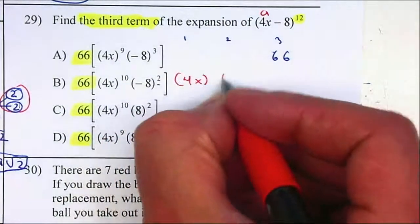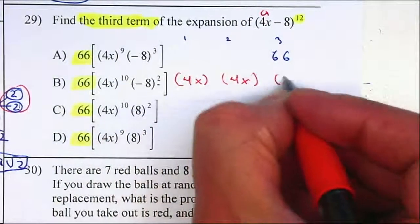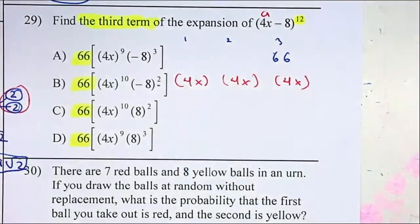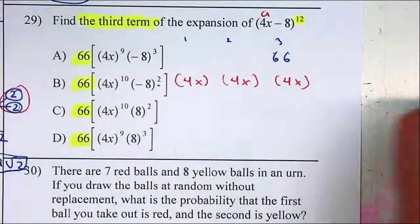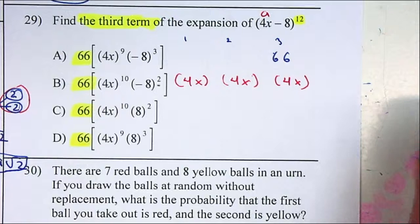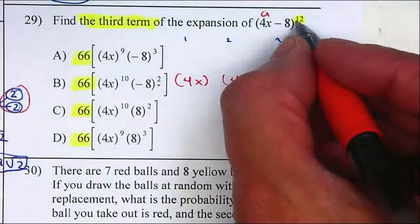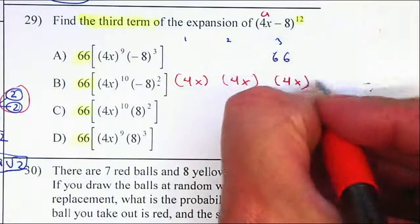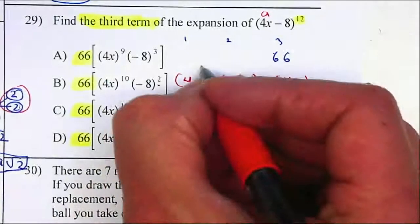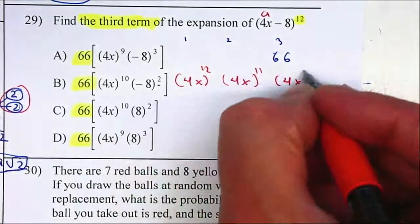4x, 4x, and 4x, and 4x on each one of them all the way to the thirteenth number. Remember it starts with 12, this is a 12. I will have 13 terms. My exponent, this is a 12, 12, 11, and 10.